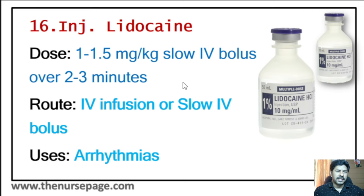Thirty-fourth injection is vasopressin. Emergency uses include treatment of cardiac arrest and vasodilatory shock. It is also used in syndrome of inappropriate ADH secretion (SIADH) to control urine output. Route is intravenous or IV infusion. Dosage: in cardiac arrest, 40 units IV bolus once; in vasodilatory shock, 0.1 to 0.4 units per minute IV infusion.